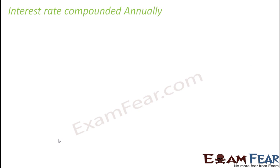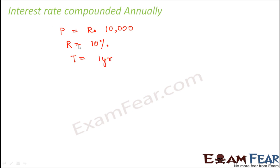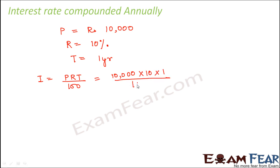Let us take an example of interest rate compounded annually. Let's say you have a principal of rupees 10,000, compounded annually at the rate of 10%, for a given number of years. For the first year, the interest would be P × R × T / 100, which equals 1,000. So the interest at the end of the first year is 1,000, and the amount at the end of the first year is 10,000 + 1,000 = rupees 11,000.